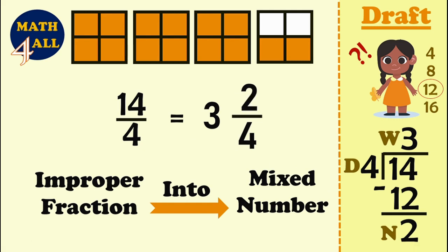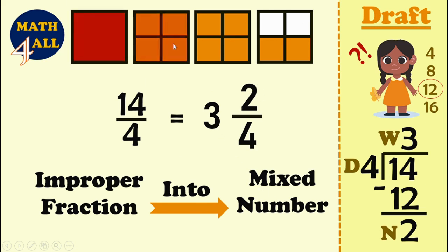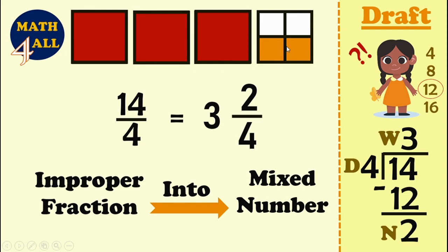So the answer is: the denominator is 4 and the numerator is 2. You just need to use long division to convert from an improper fraction into a mixed number. As you see in this model, 14 fourths converted to a mixed number gives 3 whole and 2 fourths. That is the answer.